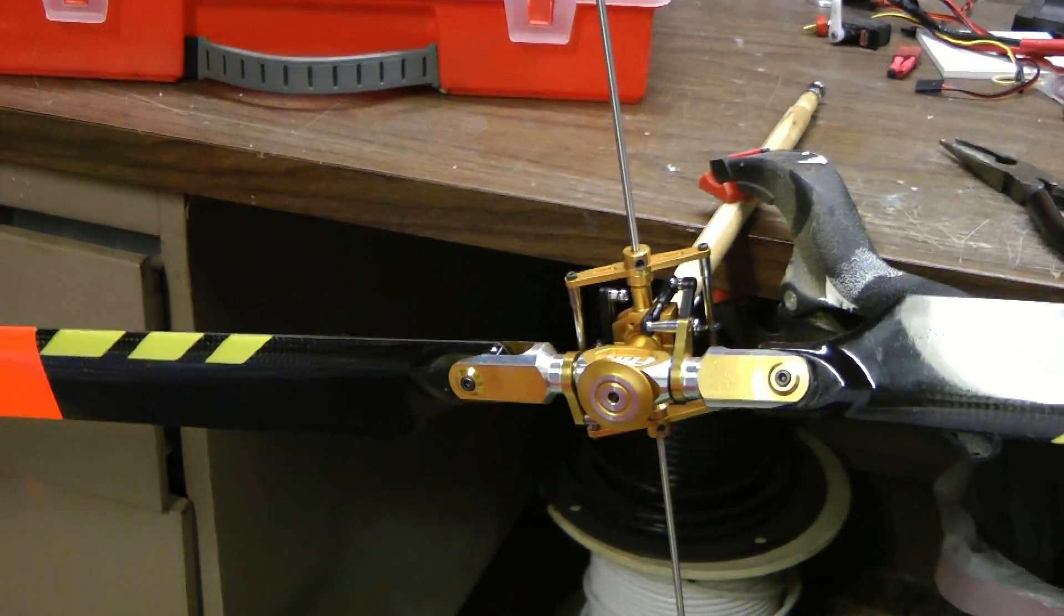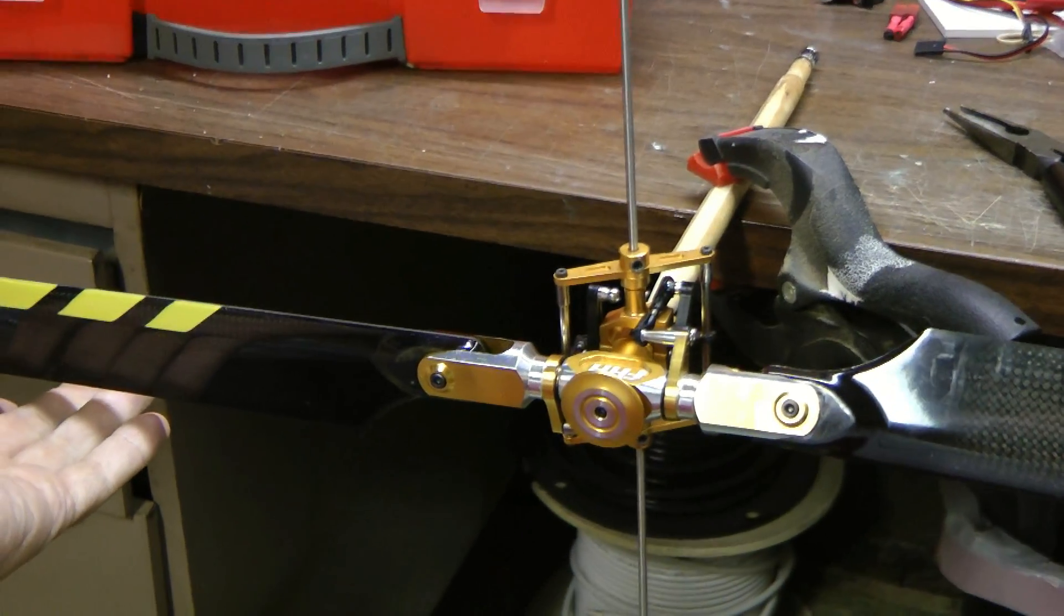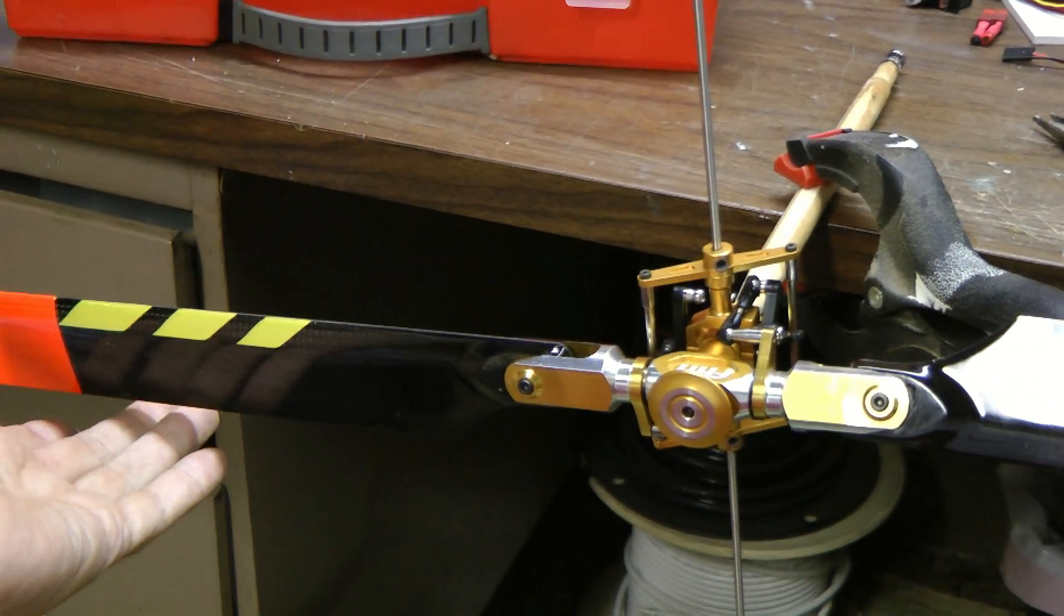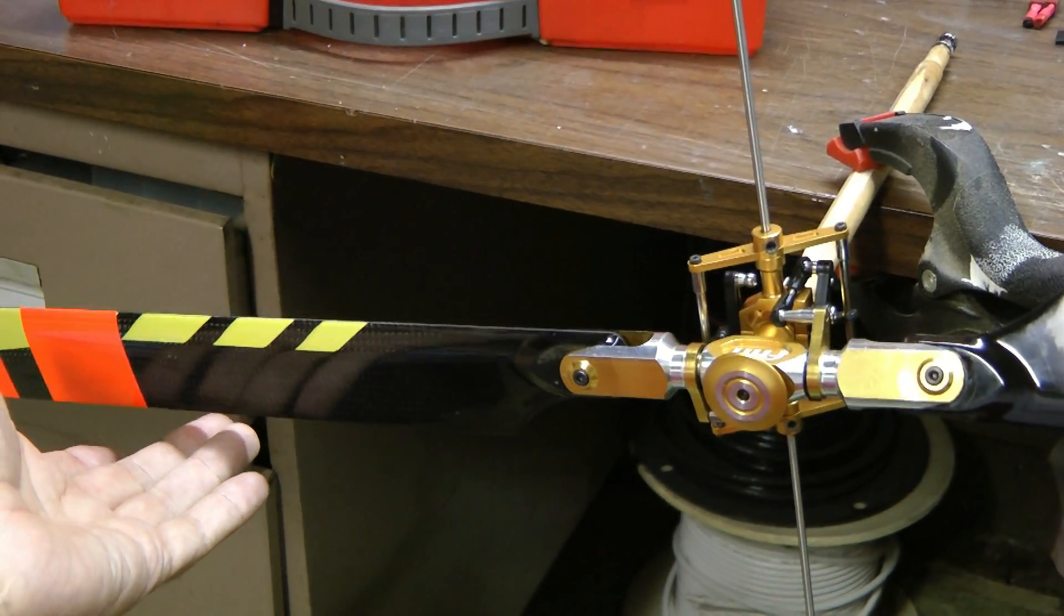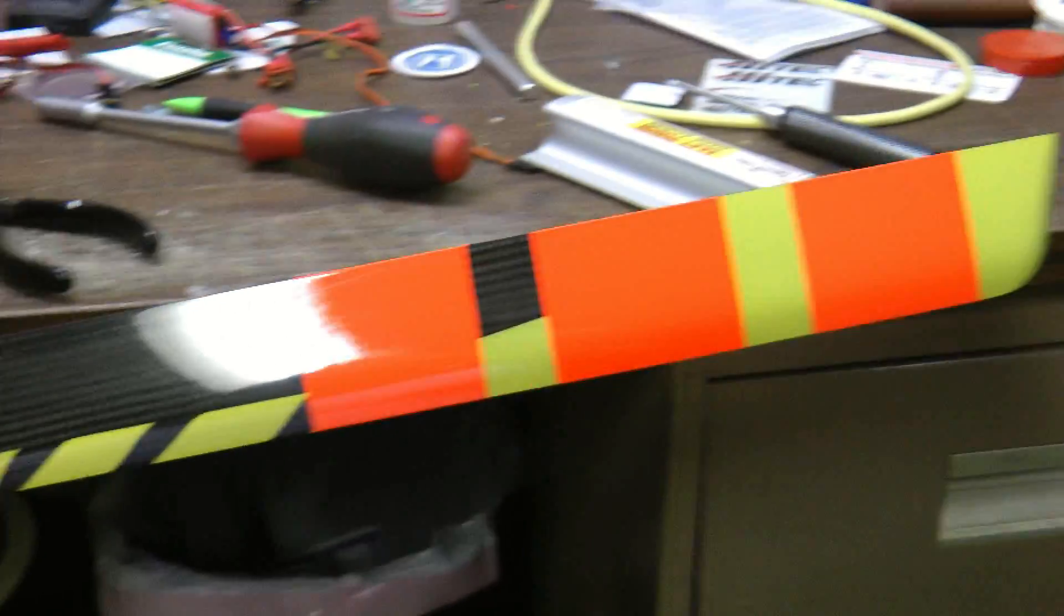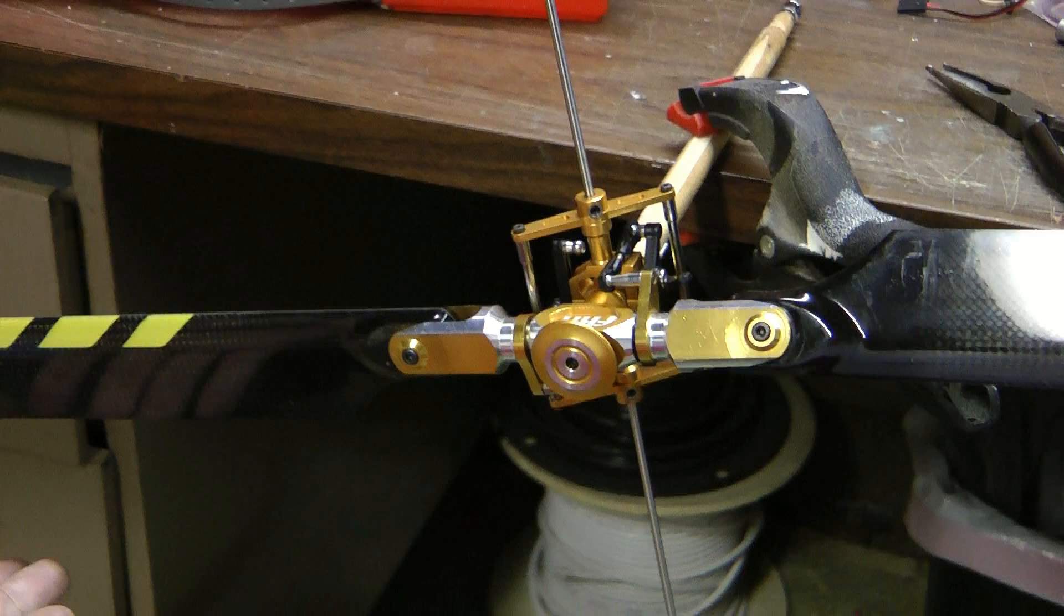you can see which blade is heavier. And in this case, it's the blade to my left. So I'm just going to use tape on this blade to get them perfectly in balance.